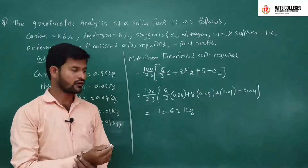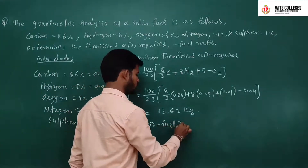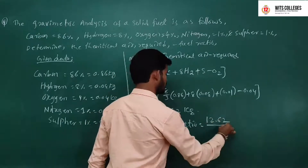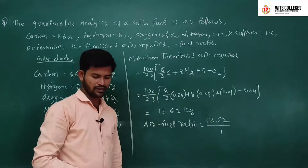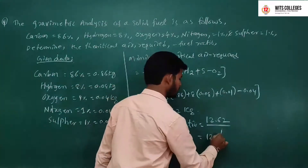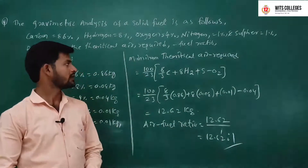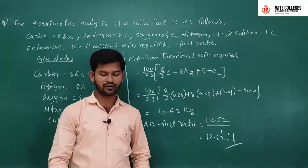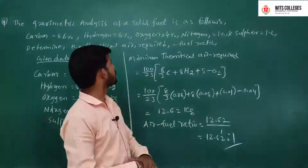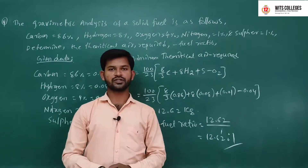The air-fuel ratio = 12.62 / 1 = 12.62 : 1. In this manner we solve the theoretical air required and air-fuel ratio. This is one of the problems of fuel combustion. Thank you.